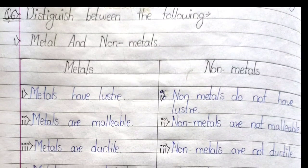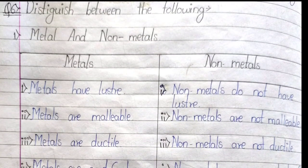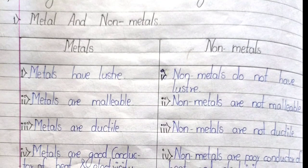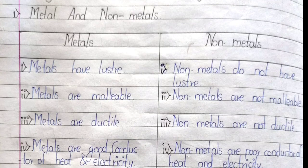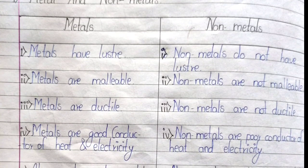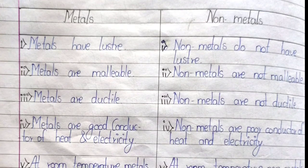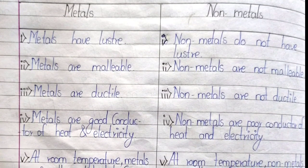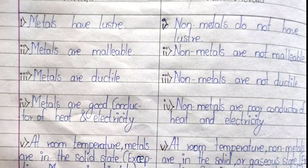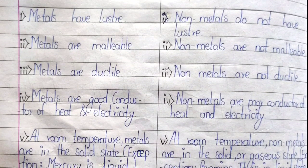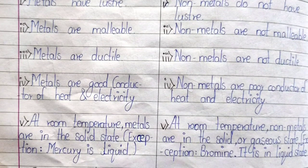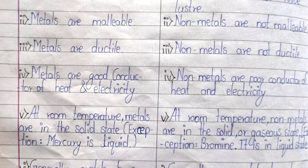Now for the notes on Question No. 6 — Distinguish between metals and non-metals. First: metals have luster; non-metals do not have luster. Second: metals are malleable; non-metals are not malleable. Third: metals are ductile; non-metals are not ductile. Fourth: metals are good conductors of heat and electricity; non-metals are poor conductors of heat and electricity. Fifth: metals are in solid state at room temperature except mercury; non-metals are in solid or gaseous state except bromine. Sixth: metals generally have high densities; non-metals generally have low densities.